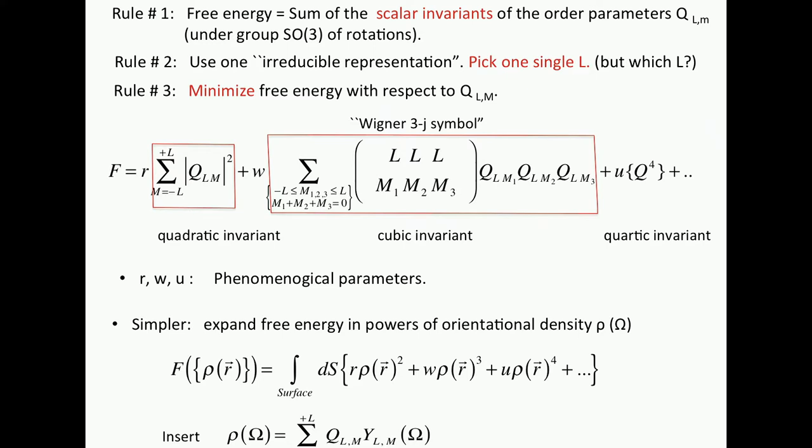So here we have the free energy. We've done step number one, step number two, and we only now need to minimize with step number three. So if you do that for L equals six, remember? That's what Nelson did. It turns out the icosahedral symmetry has the lowest free energy. Hooray! We begin to understand maybe where icosahedral symmetry comes from. This is great.